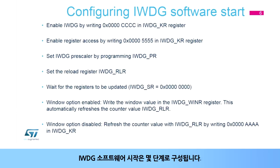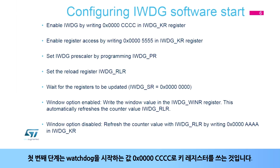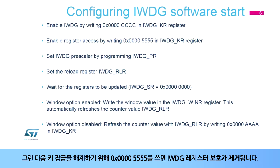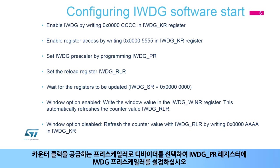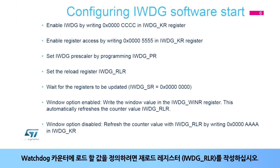The IWDG software start is configured in a few steps. The first step is to write the key register with value 0x0000CCCC, which starts the watchdog. Then remove IWDG register protection by writing 0x00005555 to unlock the key. Set the IWDG pre-scaler in the IWDG PR register by selecting the pre-scaler divider feeding the counter clock. Write the reload register, IWDG RLR, to define the value to be loaded in the watchdog counter.